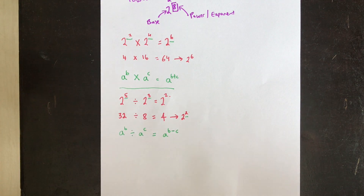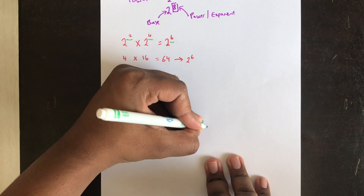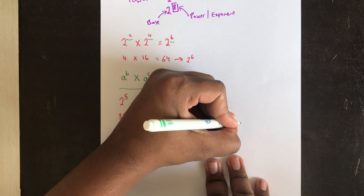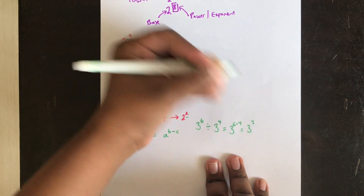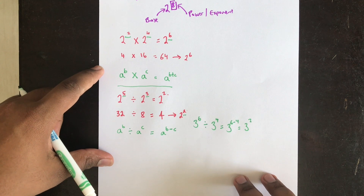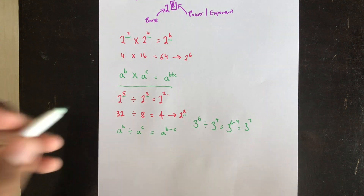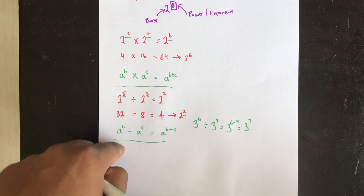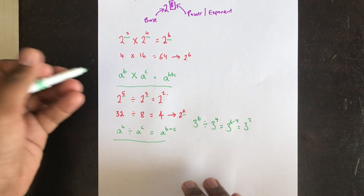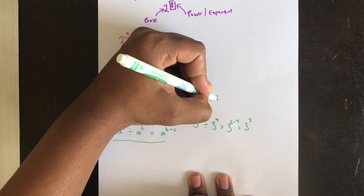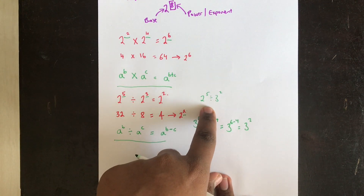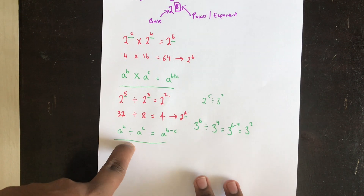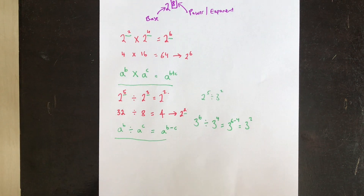This applies to anything. For example, 3 power 6 divided by 3 power 4 gives 3 power 6 minus 4, which is 3 power 2. One important condition: this law requires the base to always be the same. So for something like 2 power 5 divided by 3 power 2, you can't use this law because the bases 2 and 3 are different.